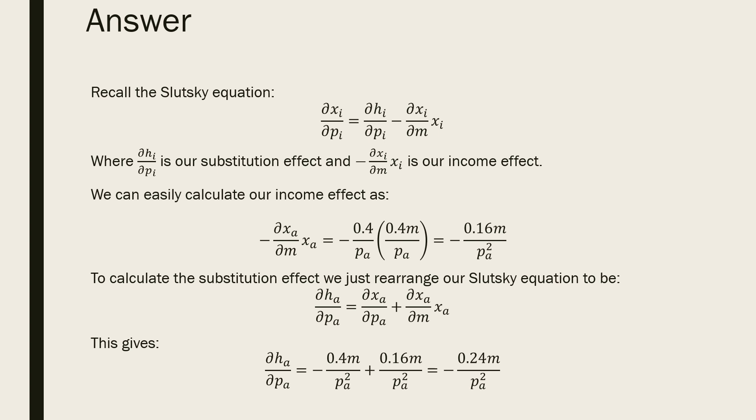To calculate our substitution effect, we just rearrange our Slutsky equation to be the following. This gives us negative 0.24m over the price of apples squared.